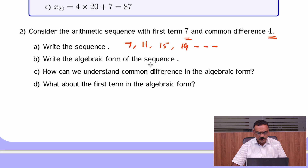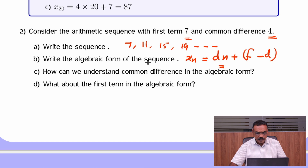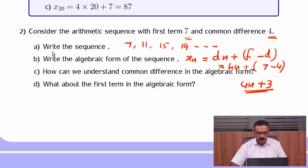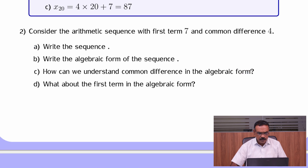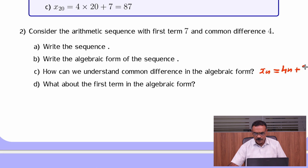Write the algebraic form of the sequence. Algebraic form is xn = dn + f − d. That is d equals 4, so 4n plus 7 minus 4, that is 4n plus 3. This is the algebraic form. The coefficient of n in the algebraic form is the common difference. Here 4 is the coefficient of n, and 4 is the common difference of the arithmetic sequence.